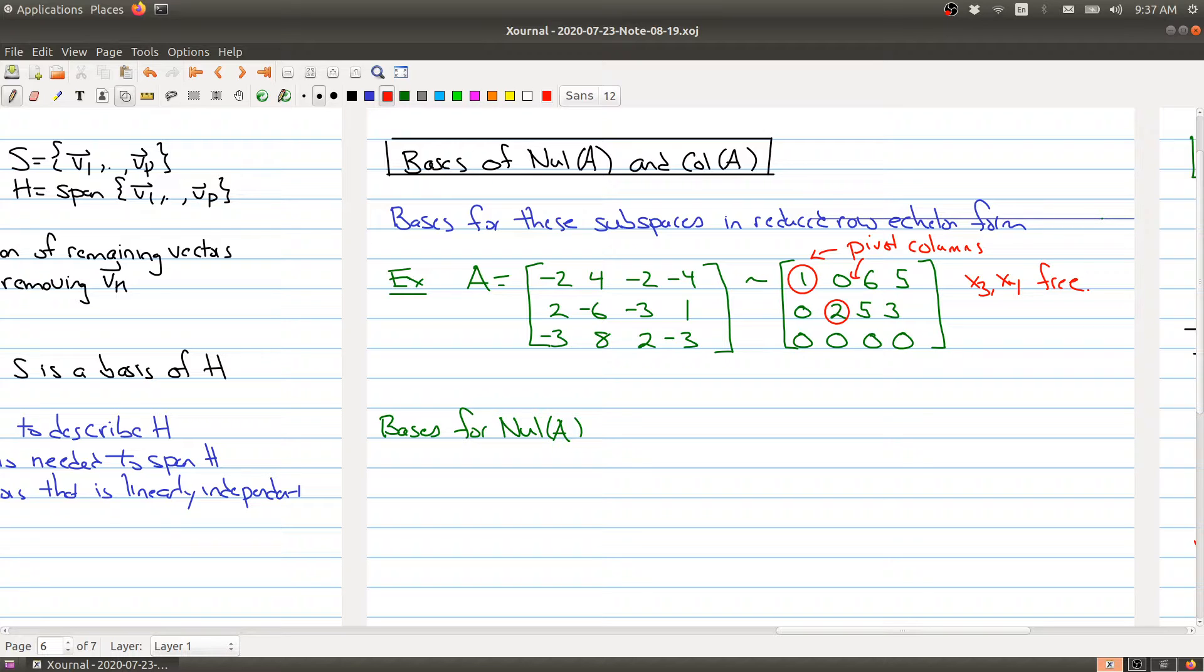Let's first do the null space. How do we find a basis for the null space? We actually saw how to get a spanning set in the last lecture. The spanning set is just describing the set of all solutions. I'm going to skim over some of the details here.